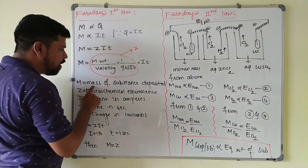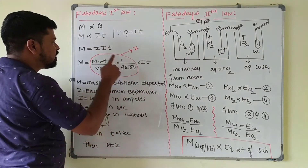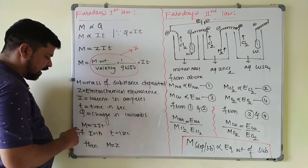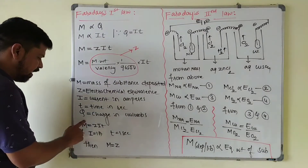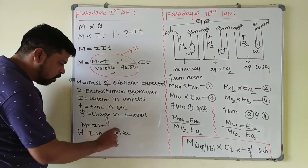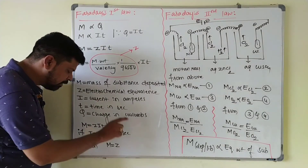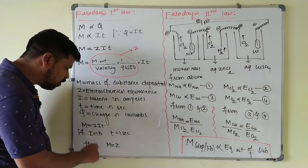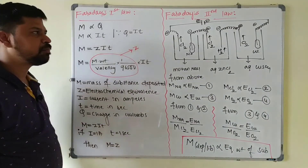In the formula M = ZIt: M is the mass of the substance deposited, Z is electrochemical equivalence, I is current in amperes, T is time in seconds, and Q is charge in coulombs. If I = 1 ampere and T = 1 second, then M = Z. So if one ampere of current flows for one second, the mass deposited equals the electrochemical equivalence.